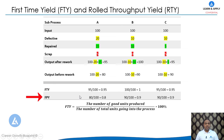In the calculation of First Pass Yield, we do not consider how many products were made okay after rework. This formula uses output before rework as the numerator, so FPY for Process A equals 80 divided by 100, which is 0.8. First Pass Yield for Process B is 0.9, and for Process C is also 0.9.